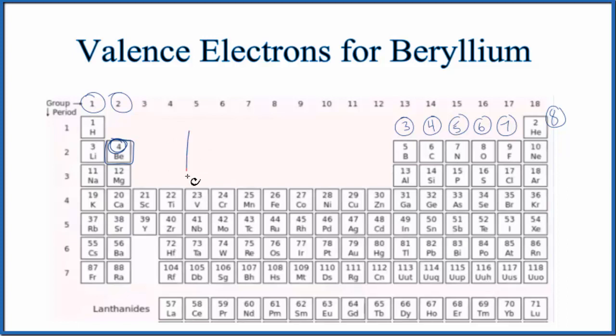We'll write the configuration 1s2. That shell is full. We go to 2s and we'll put two in there. So two plus two, that gives us the four. But only the highest energy level, this second energy level, that's the valence electrons. And there are two valence electrons for the beryllium atom here.